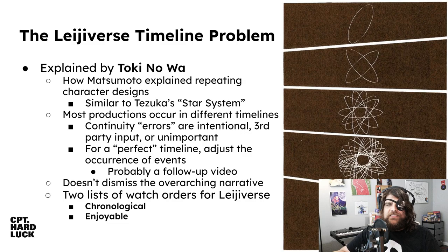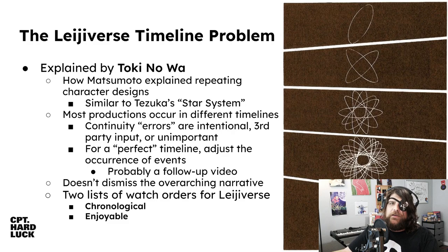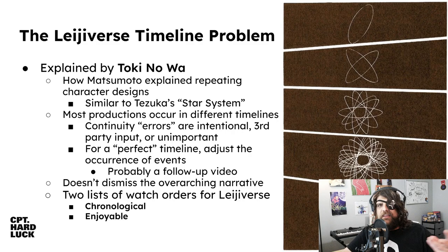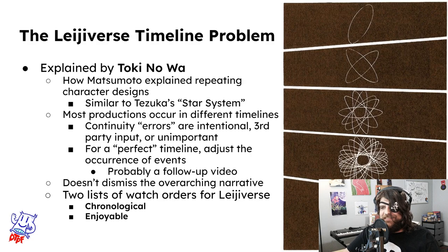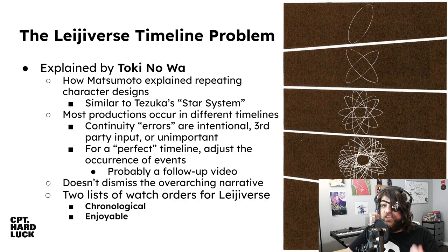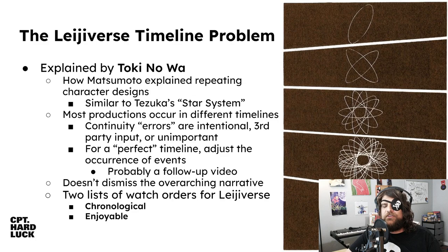Sometimes there's third-party input that can make things wonky, or the continuity errors are just unimportant — we're talking about a sci-fantasy story. This can bug hard sci-fi fans because it's very soft: the principles are based on reality but made fantastical. There is an overarching narrative within the events of the Liegeverse that can be connected, but variations on the themes within those events are what throw people off. I'm going to try to cut through that and focus on what actually ties everything together.